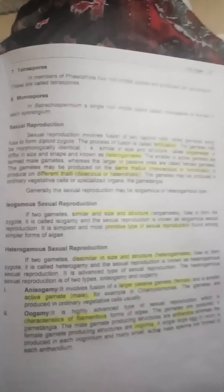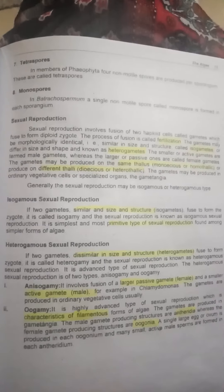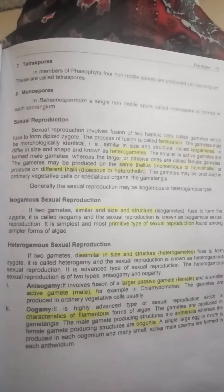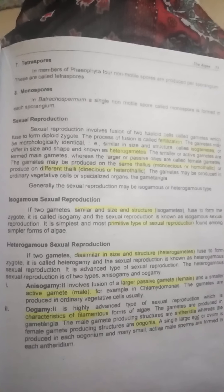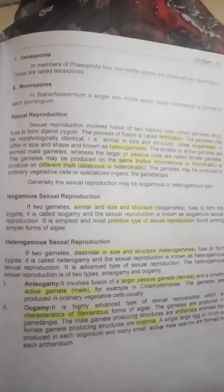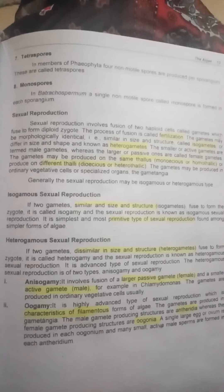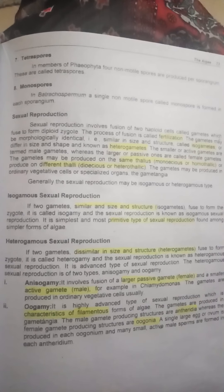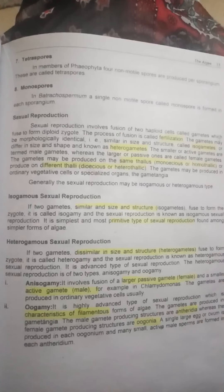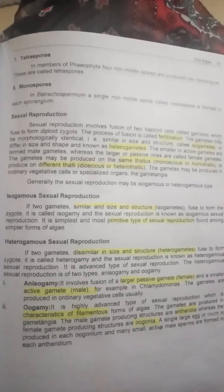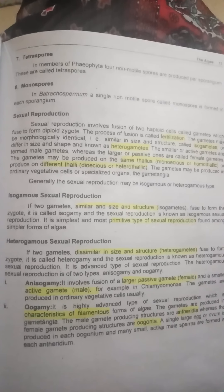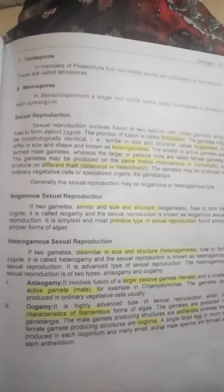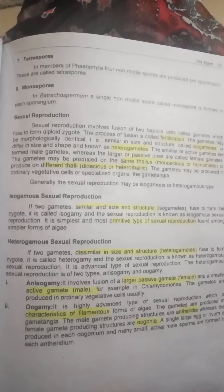If gametes are the same, the organism is called monoecious or homothallic algae. If they are different, it is called heterothallic algae.